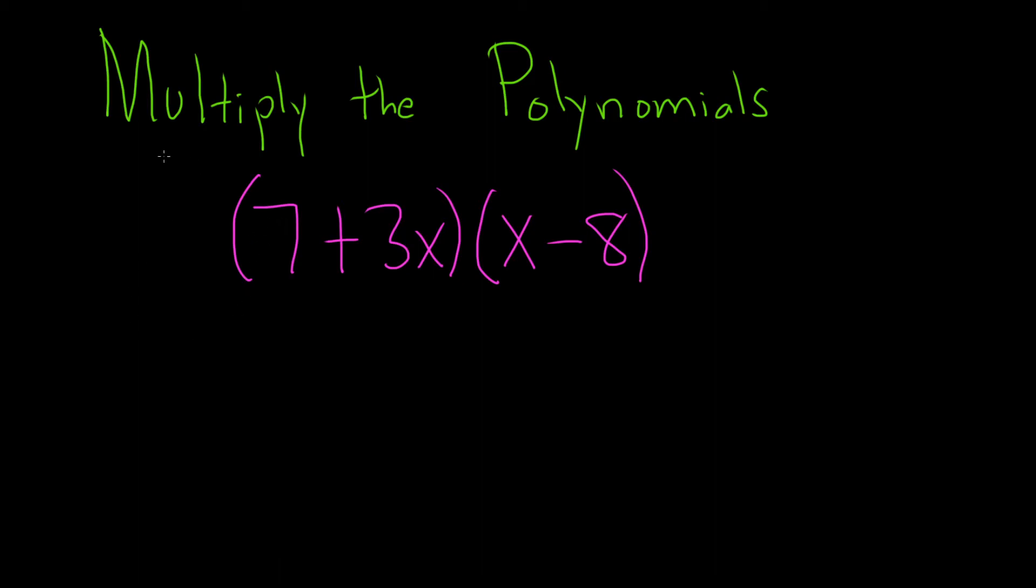Multiply the polynomials. Let's go ahead and work through its solution. Many people use FOIL. I do the same thing, but I do it a little bit differently because I feel like this way is better, because if you had an extra term here, you could still do it this way.